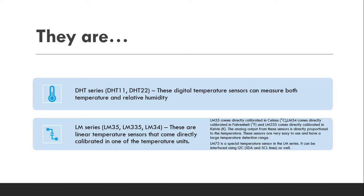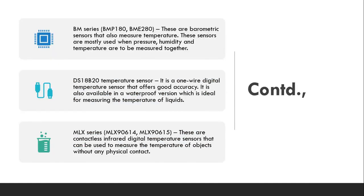Well, the next series is BM series. BM series is also equally famous. BMP180, BME280, these are the most famous sensors that are available in these ranges and these are barometric sensors which can measure temperature. There is some additional value add to it. These sensors are mostly used when you have the pressure, humidity and temperature to be measured together. For example, when you use BME280, you could also measure the pressure and humidity alongside temperature. That's something very good, right?